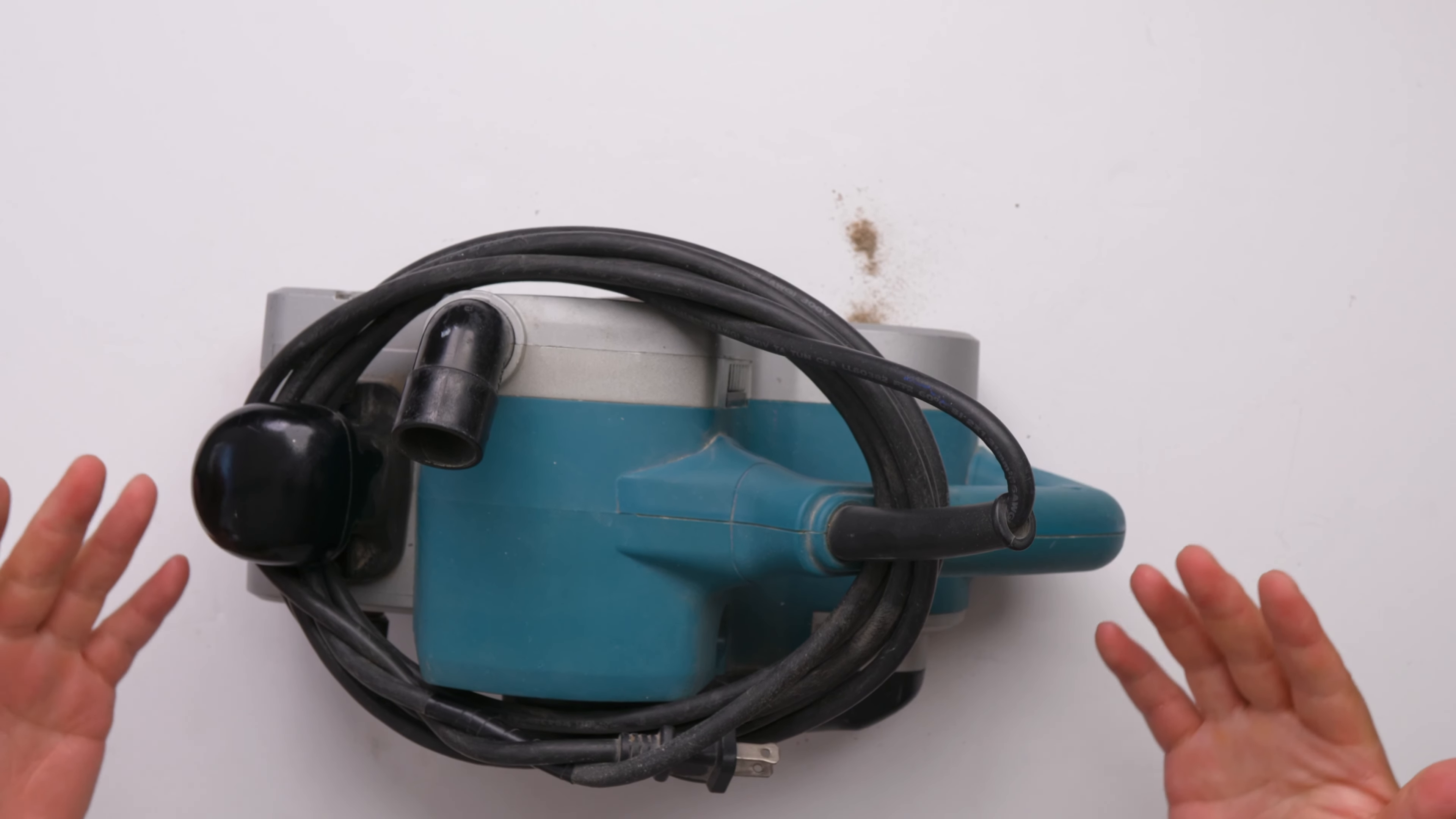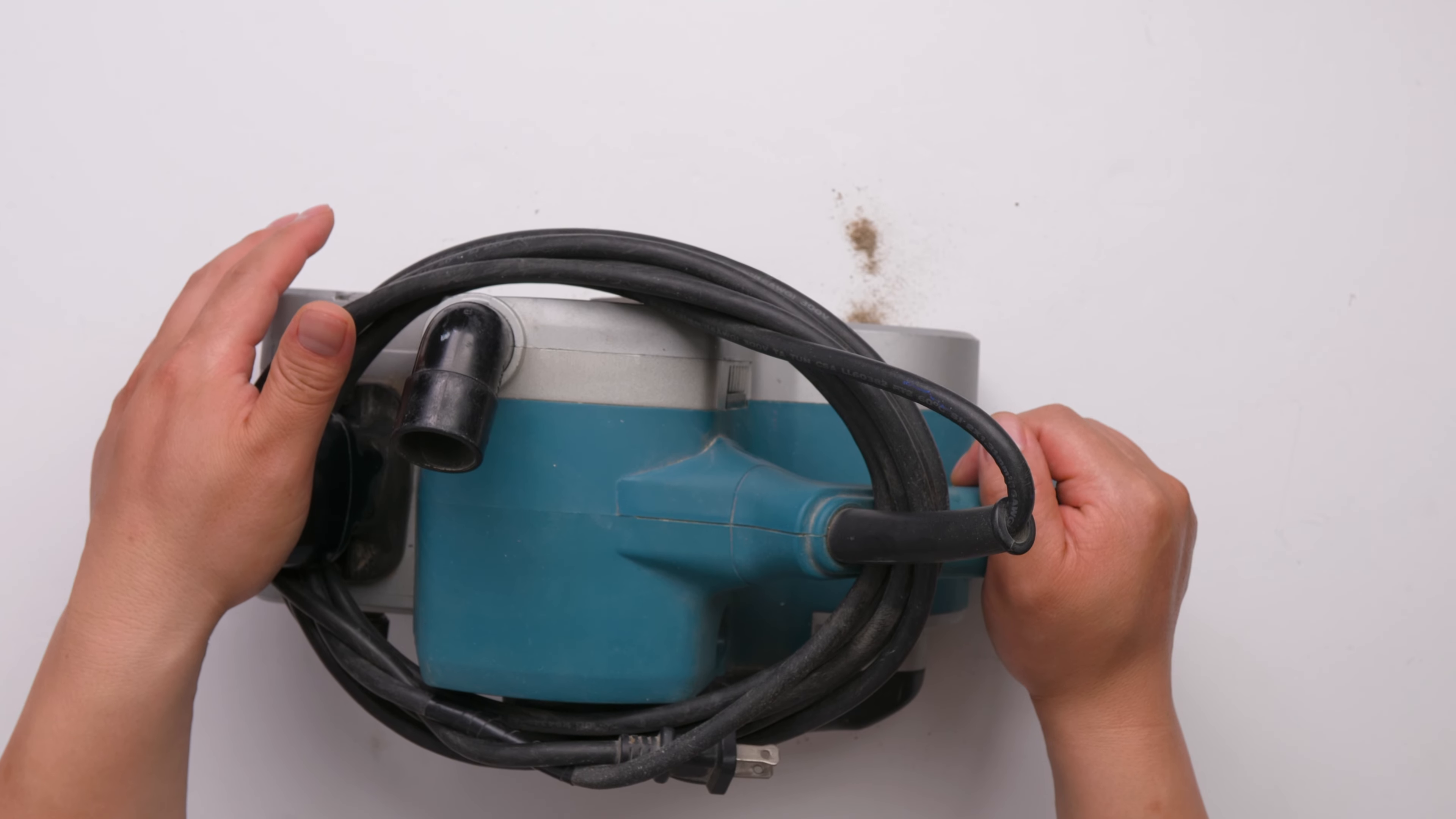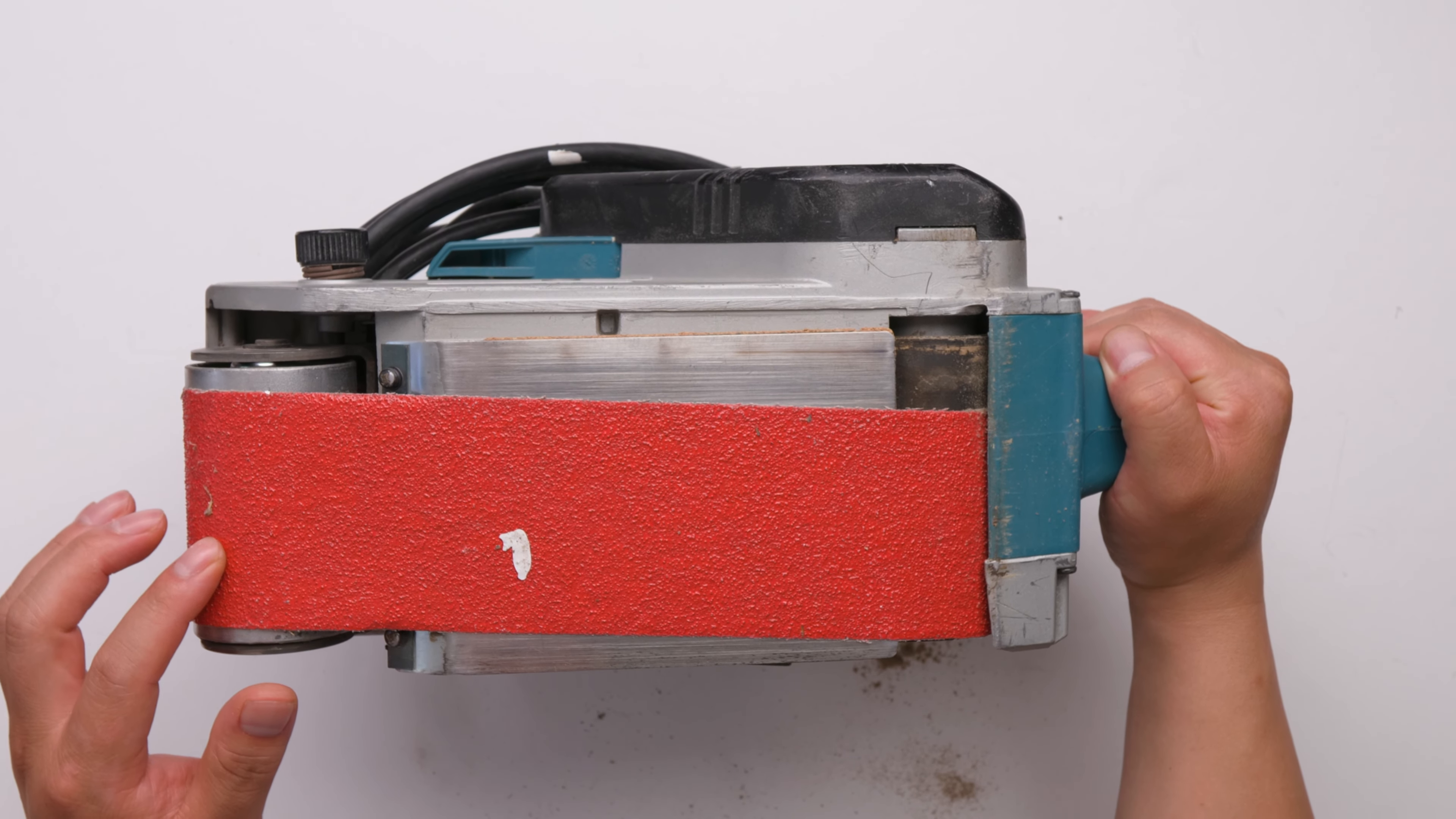The speed is not adjustable. There's another version where you can adjust the speed, but I don't think that's necessary because the speed isn't super fast. This is four inches, but I couldn't find a four-inch belt, so I put a three-inch belt on it. You can use a three-inch belt—there's no problem.